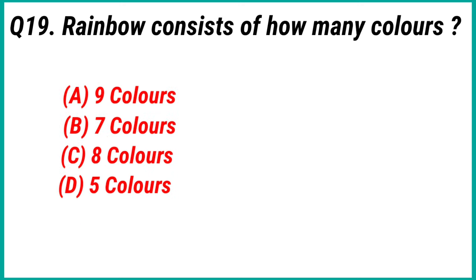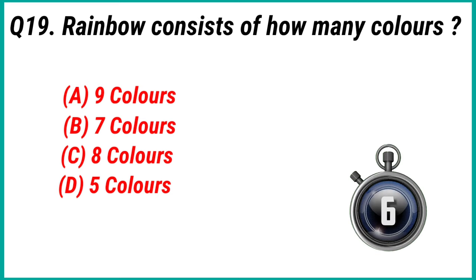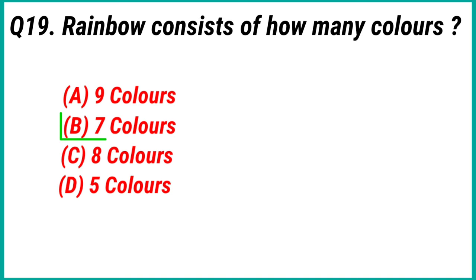Question 19: A rainbow consists of how many colors? Answer option B: Seven colors.